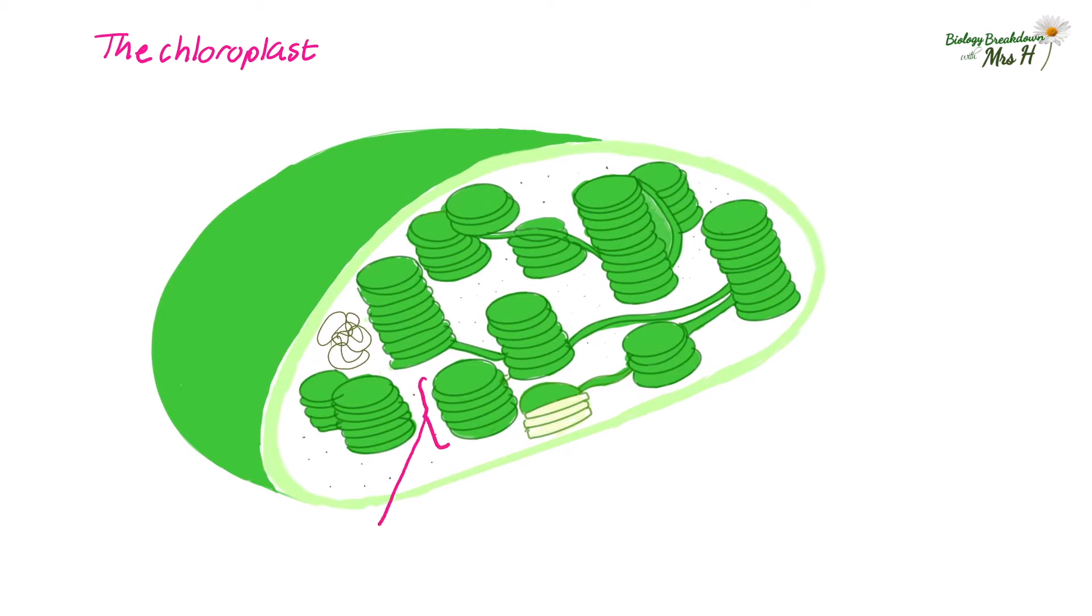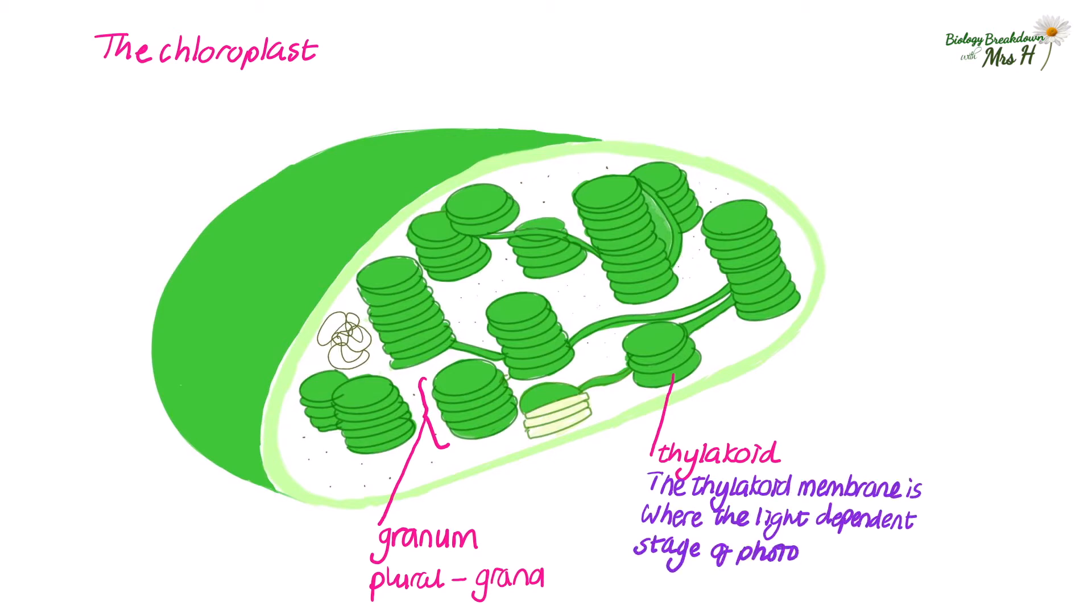This is a granum, a stack of membrane bound compartments. The plural of a granum is grana and these membrane bound compartments are called thylakoids and it is the membranes of these thylakoids where the light dependent stage of photosynthesis takes place. This is the first stage of photosynthesis.